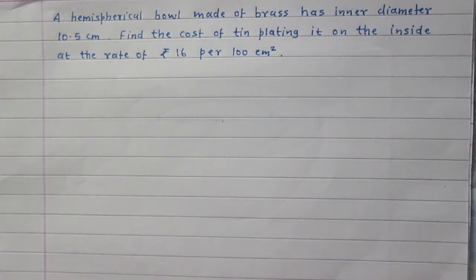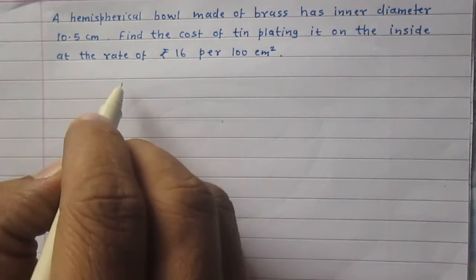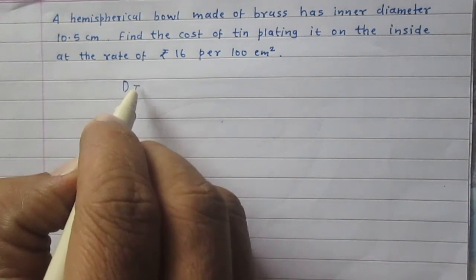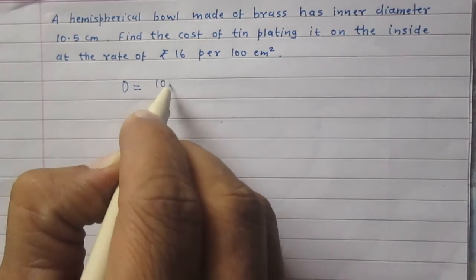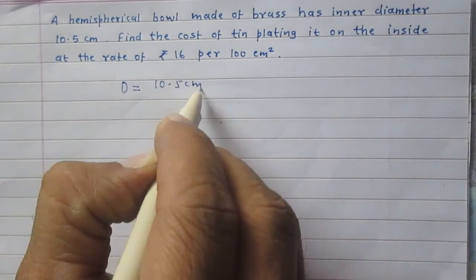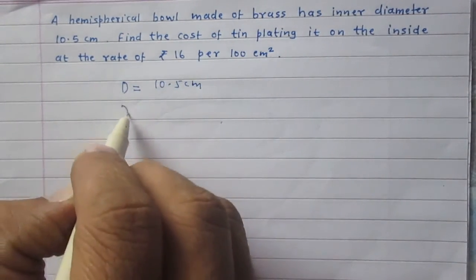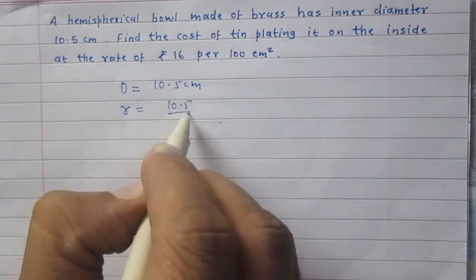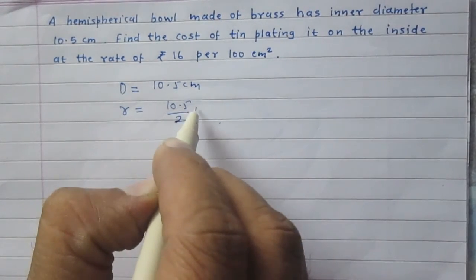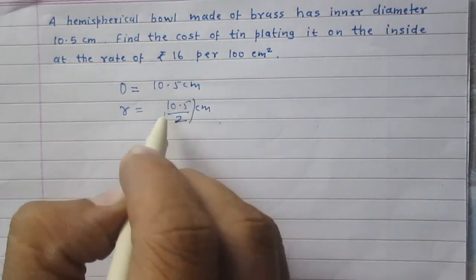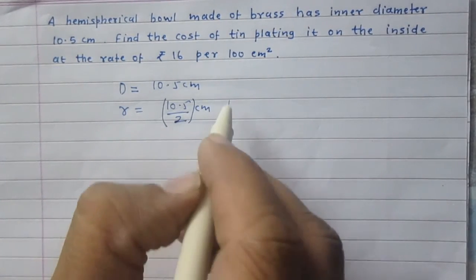The radius of the ball is 10.5 divided by 2, because the diameter of the ball is given to us as 10.5 centimeters. So radius is half of the diameter, it is 10.5 divided by 2 centimeters, or you can write it as 105 divided by 20 centimeters.